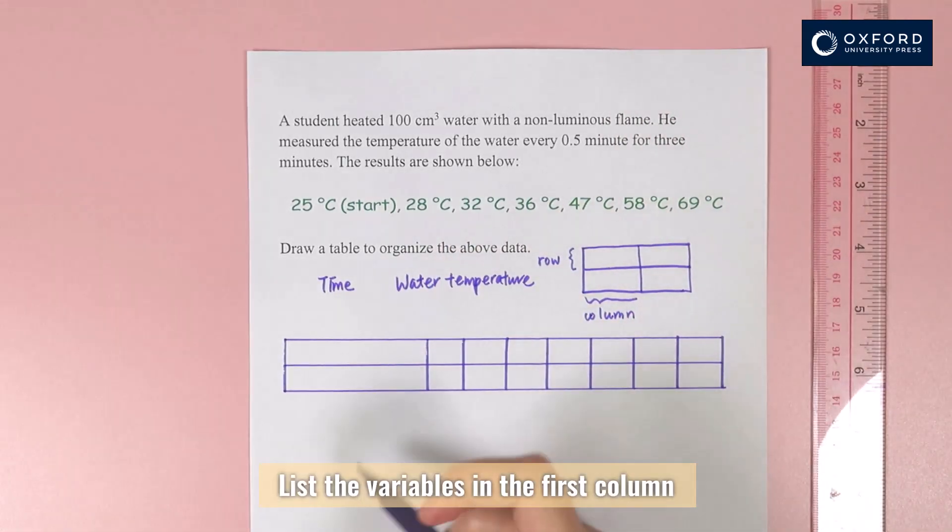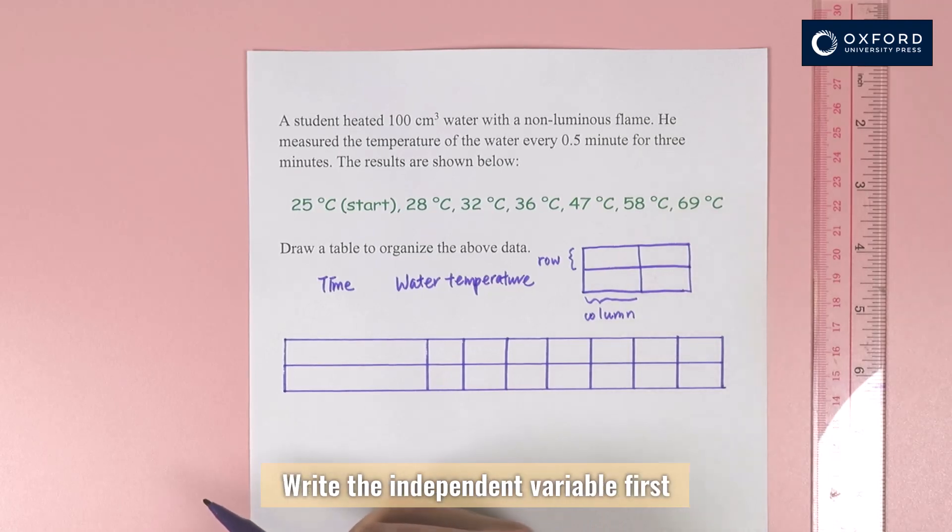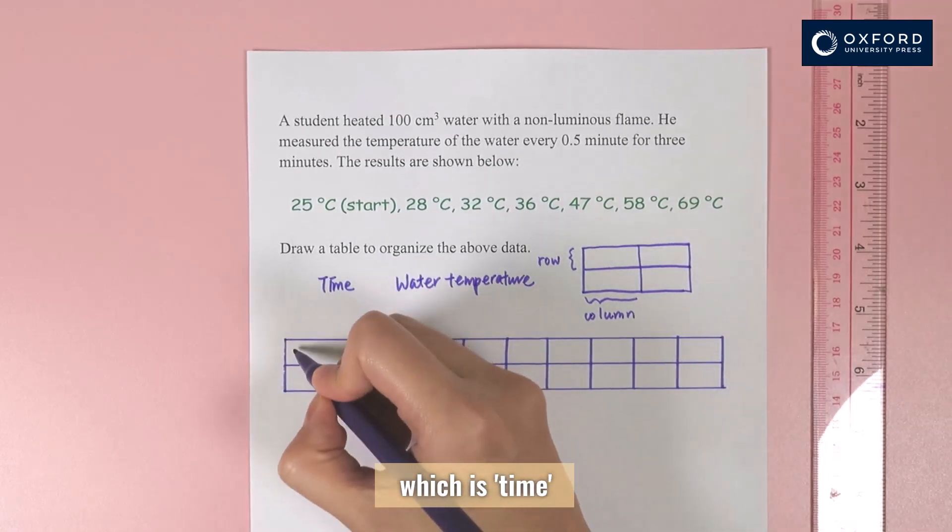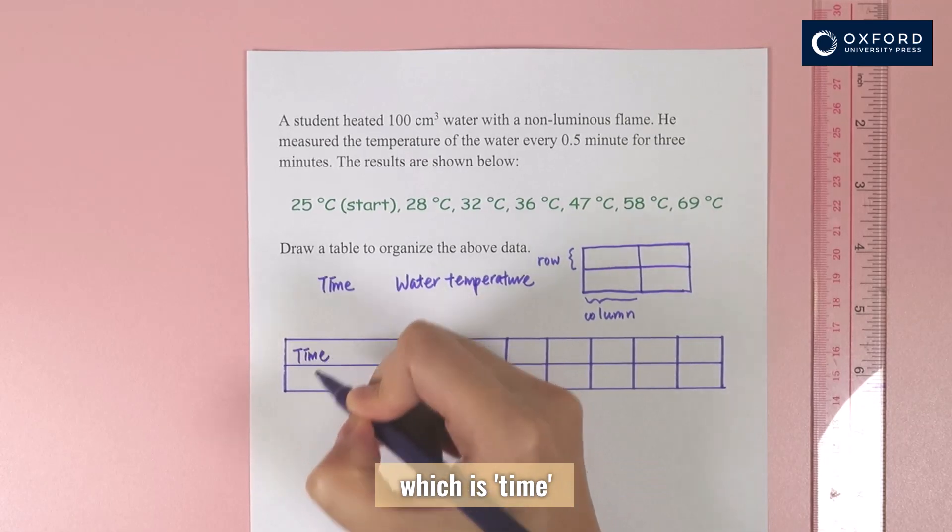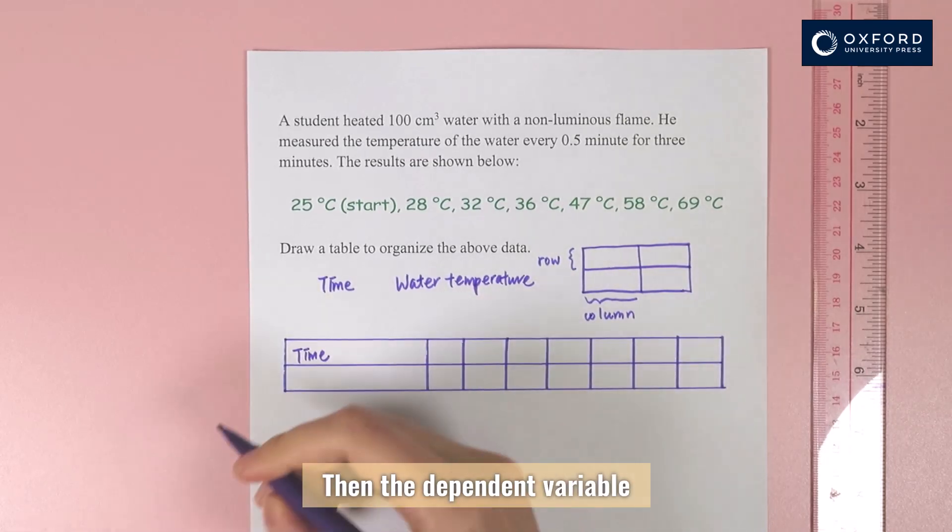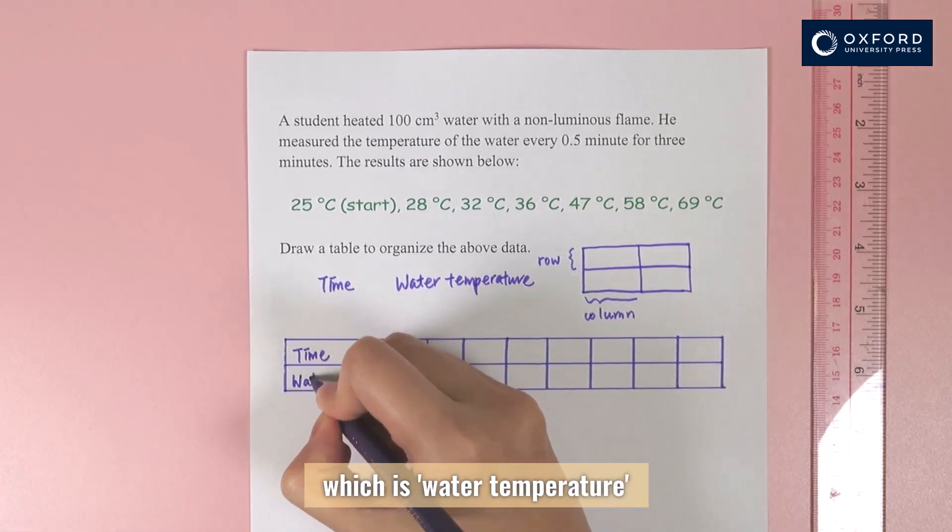List the variables in the first column. Write the independent variable first, which is time. Then the dependent variable, which is water temperature.